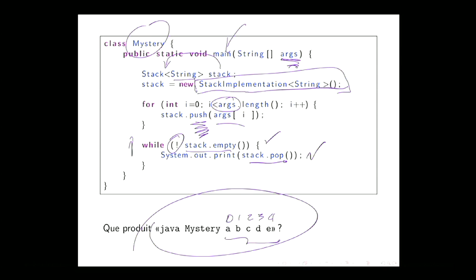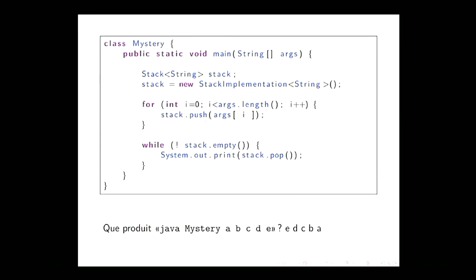Question : lorsqu'on déclare Stack<String>, ça ne veut pas dire que la pile va contenir seulement un String ? Ici, j'ai utilisé un type générique et je demande l'aide du compilateur. Je lui dis : ma vision des choses est que je veux utiliser une pile et sauvegarder seulement des objets chaînes. Si j'essaie de faire quelque chose d'autre, tu me tapes sur la main. C'est la beauté des génériques — il va détecter ces erreurs-là dans nos programmes.